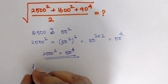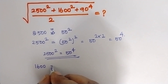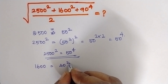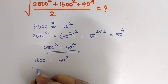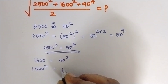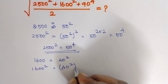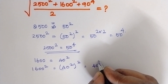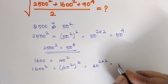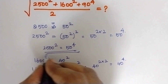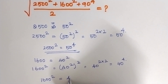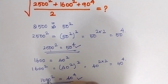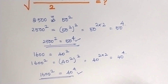Then take 1600. 1600 is equal to 40 squared. So 1600 the whole square is equal to 40 squared the whole square, which is equal to 40 to the power 2 times 2, which is equal to 40 to the power 4. So we found that 1600 the whole square is equal to 40 to the power 4.